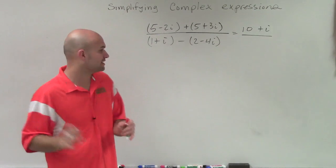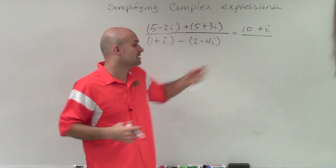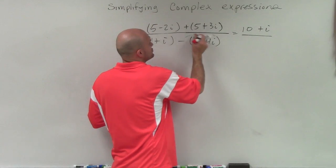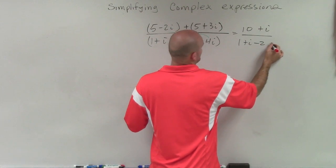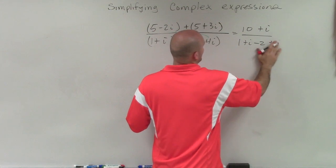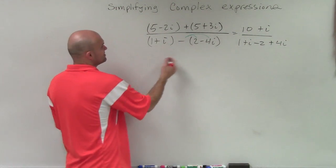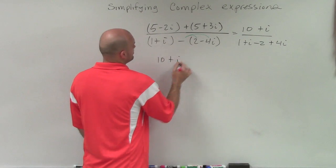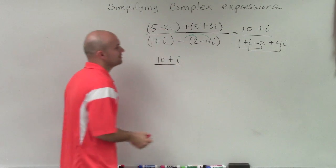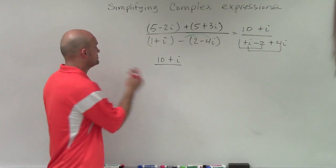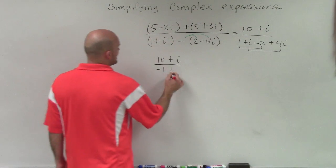Now in the denominator, I have to be a little bit more careful because I'm subtracting the two binomials. Notice that I'm subtracting this whole term, so I need to make sure I apply distributive property. So in this case, I'll have 1+i minus 2 plus 4i. So when I simplify this, 1 minus 2 is going to become -1, and i plus 4i is going to become a positive 5i.